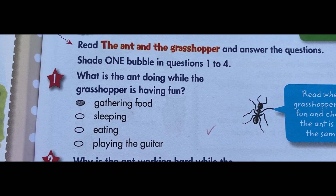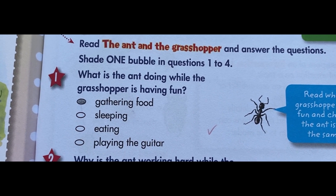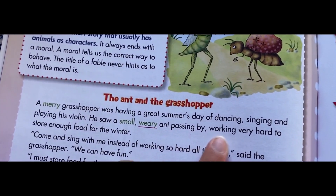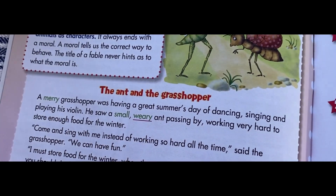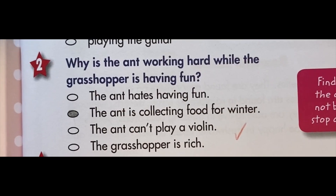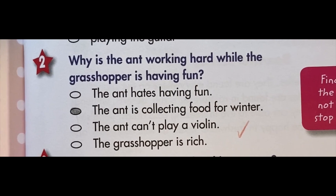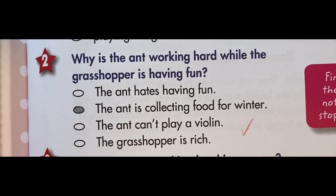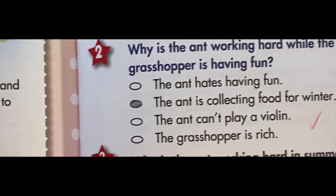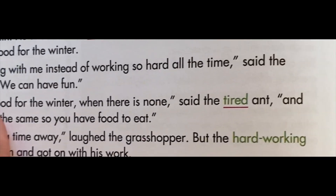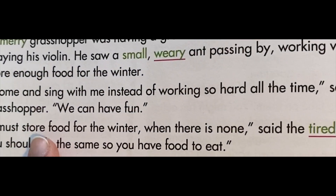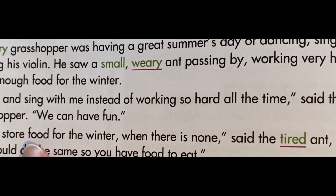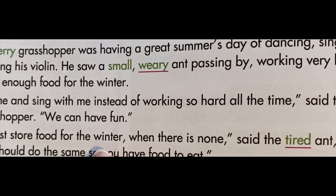I know the ant is gathering food because I can infer from the text. In question two, I can infer from the text that the ant isn't able to stop and have fun because he needs to store food for winter.